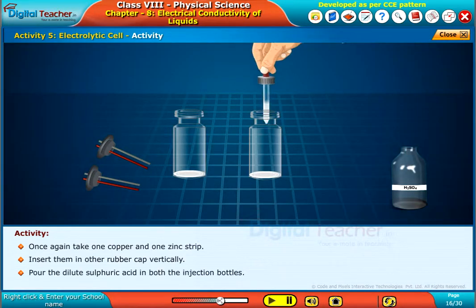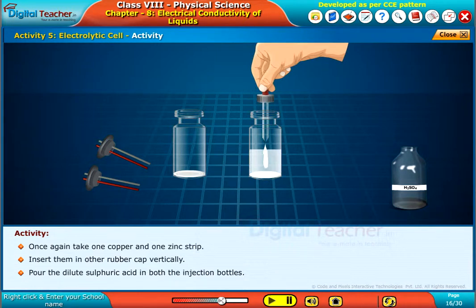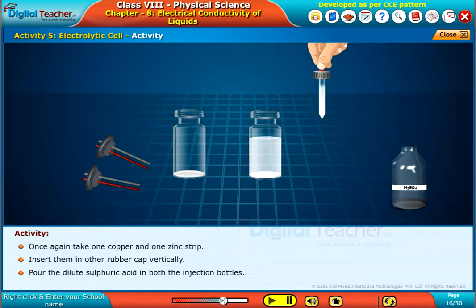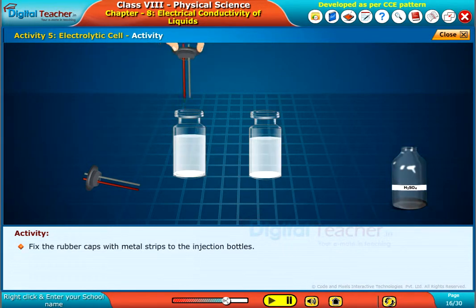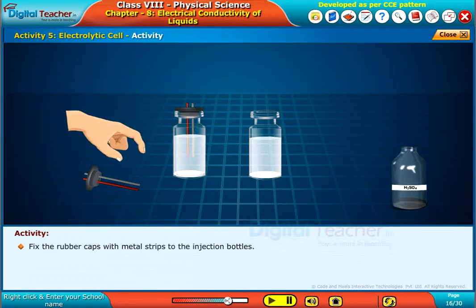Pour the dilute sulfuric acid in both the injection bottles. Fix the rubber caps with metal strips to the injection bottles.